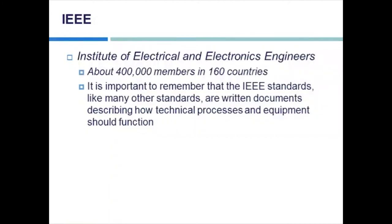The IEEE comes up with the standards — not building equipment, just guidelines and standards that equipment should be built to. They have about 400,000 members in 160 different countries. They create written documents describing how technical processes and equipment should function. For example, years ago when 802.11n high-throughput was exciting, the IEEE hadn't finished the document before vendors started releasing equipment, causing early compatibility problems. Once it was standardized, vendors made their equipment conform, and the Wi-Fi Alliance could verify interoperability.